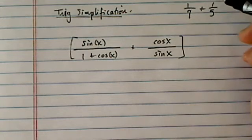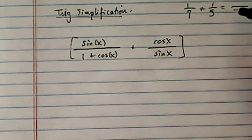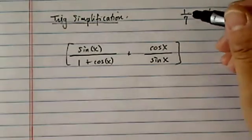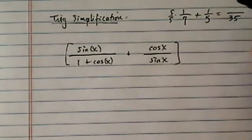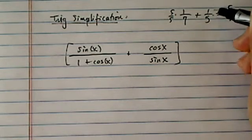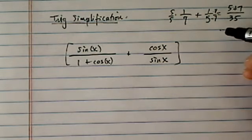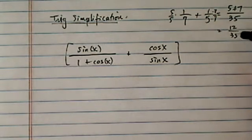If I have 1 over 7 plus 1 over 5, we will have 35 as common denominator, least common denominator, and then this one I'm going to multiply by 5, and this one I'm going to multiply 7 top and the bottom, so the answer becomes 12 over 35.